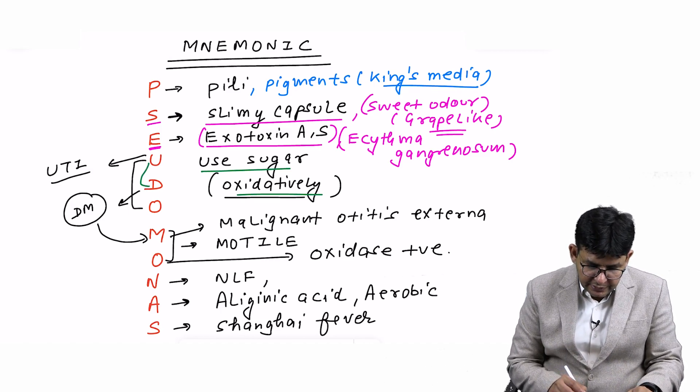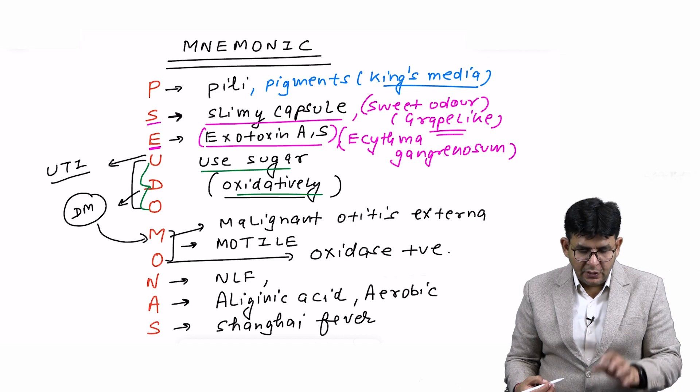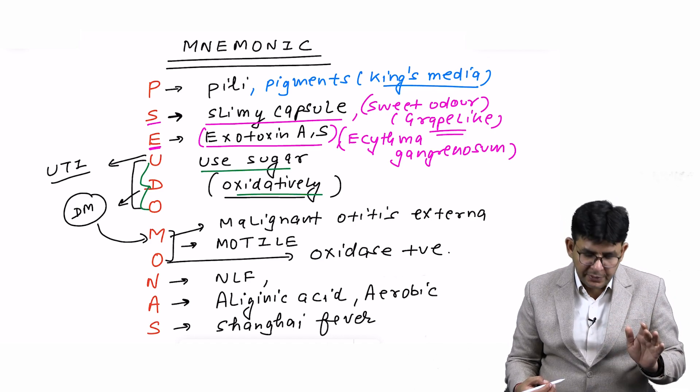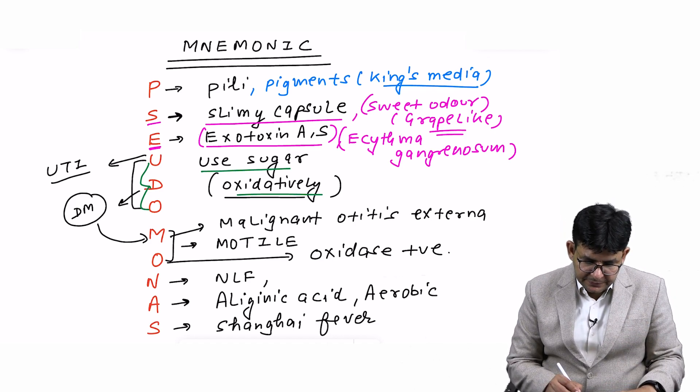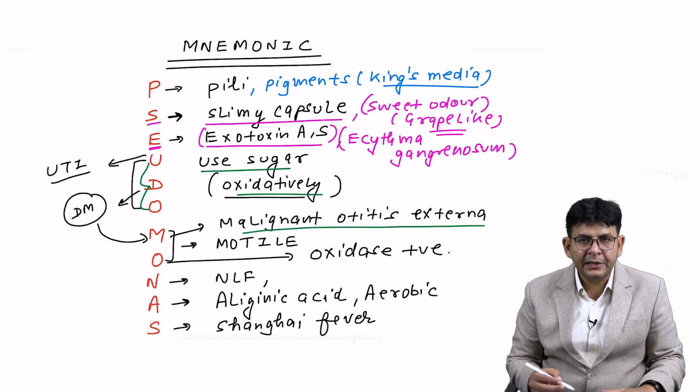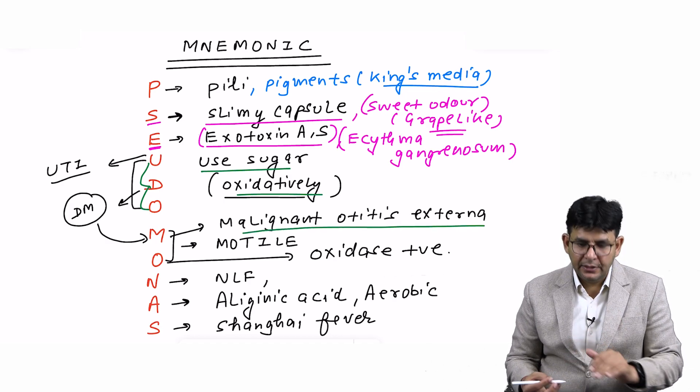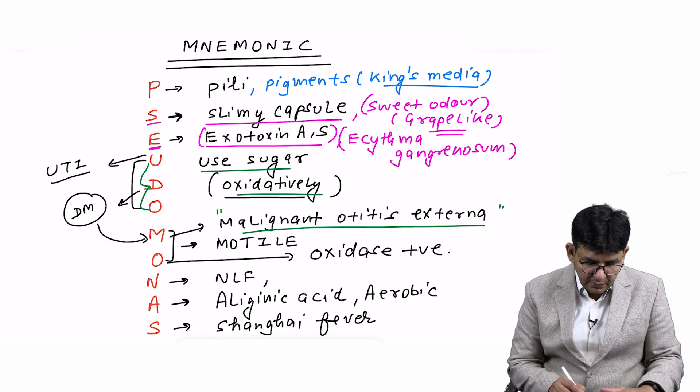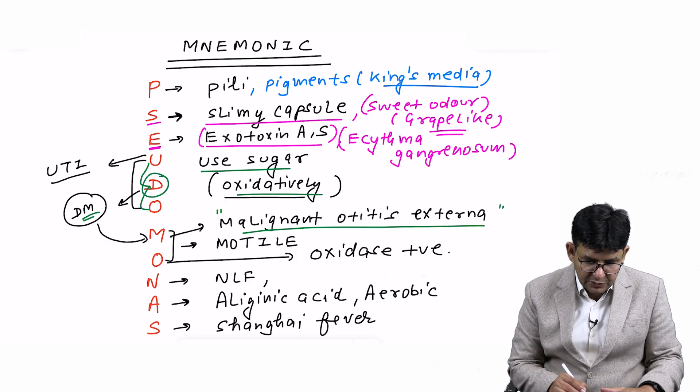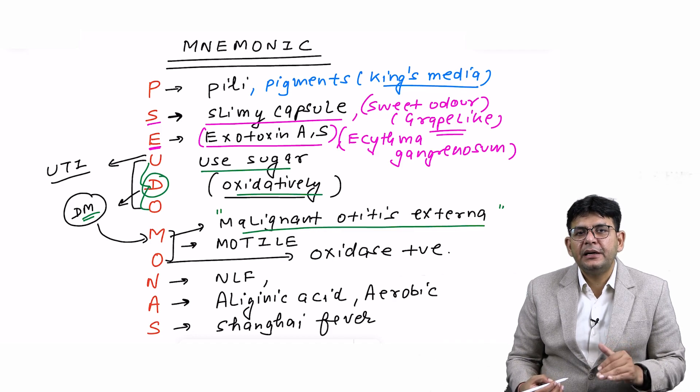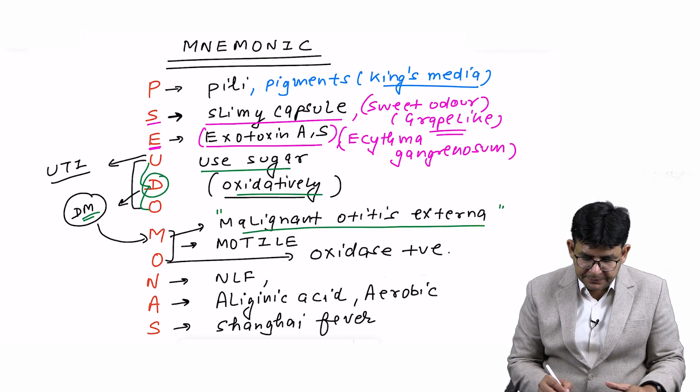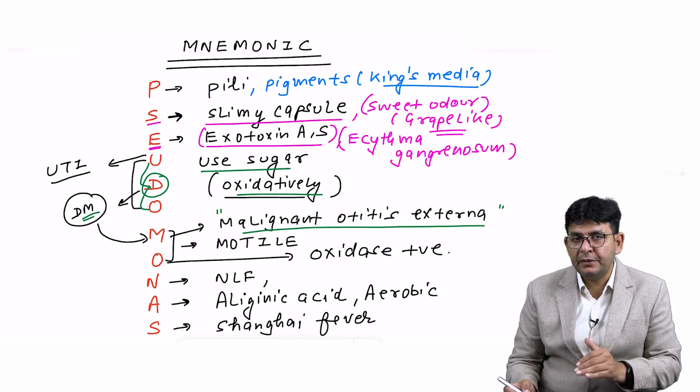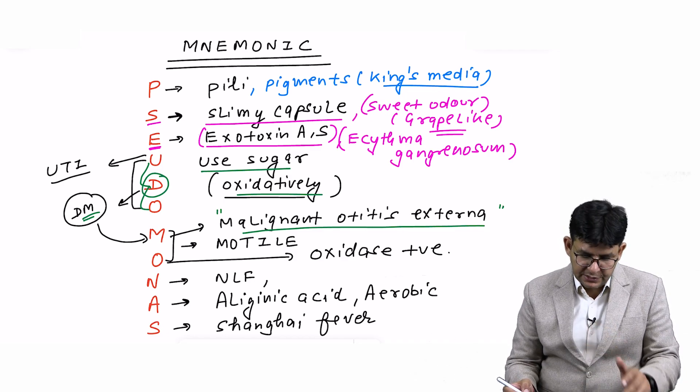M is for malignant otitis externa. This malignant otitis externa is common in whom? From D you can remember DM also—in diabetes mellitus patients they can have this malignant otitis externa, which is a fulminant infection caused by Pseudomonas.